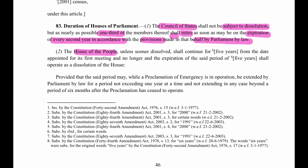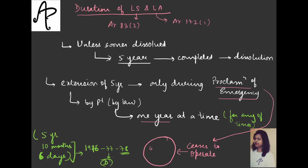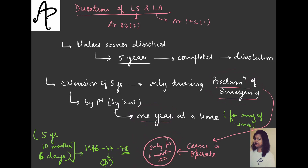Another thing it is telling: not exceeding in any case beyond the period of 6 months after the proclamation has ceased to operate. This means while the emergency is going on, one year at a time it can keep being extended. But when the emergency ceases to operate, within that period it can only be extended for 6 months - beyond that it cannot be done. While the emergency is in proclamation, one year one year it can be extended, but once the emergency is over, it can only be extended for 6 months.